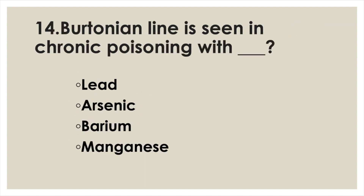Burton's line is seen in chronic poisoning with: Option A: Lead. Option B: Arsenic. Option C: Barium. Option D: Manganese. Answer: Option A, Lead.